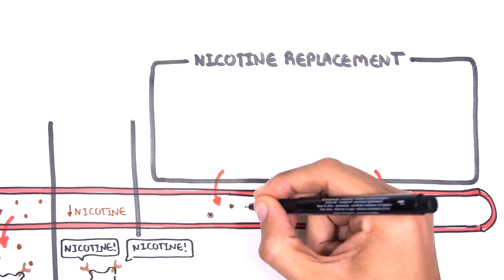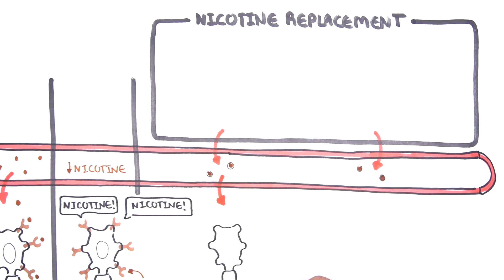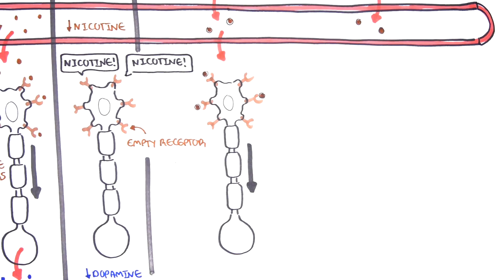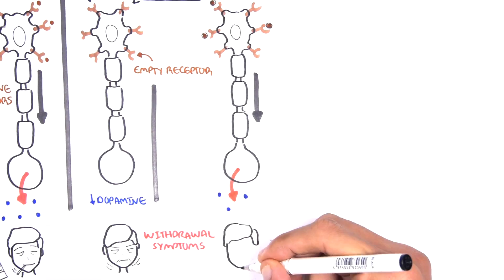NRT allows just enough nicotine to be in the body and bind to the nicotine receptors to keep many but not all of them filled. This helps reduce the withdrawal symptoms you may feel when quitting smoking.